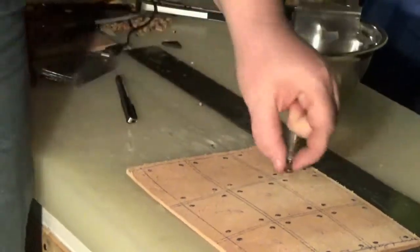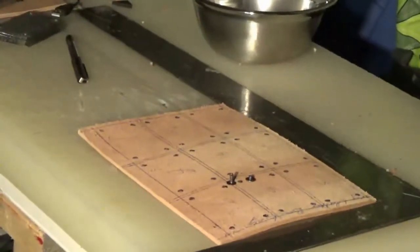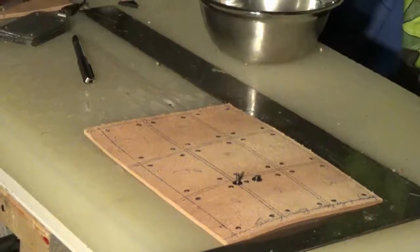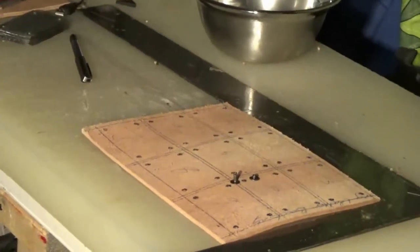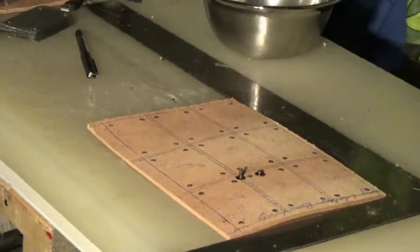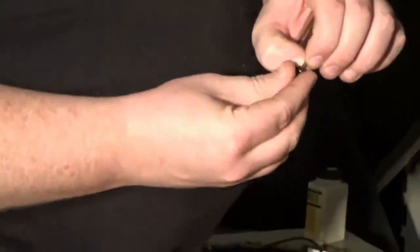What we're going to be using is this here male female rivet. You can get these from Tandy. They're pretty cheap. They come in a bag of 50 for $5. They're wonderful cost savings.